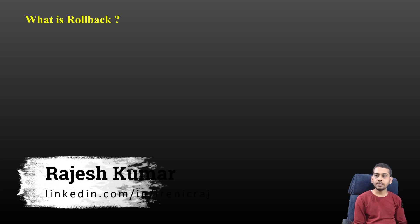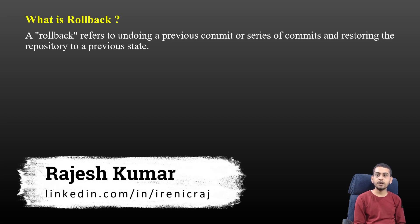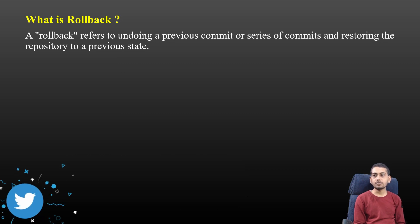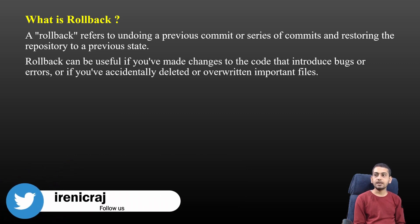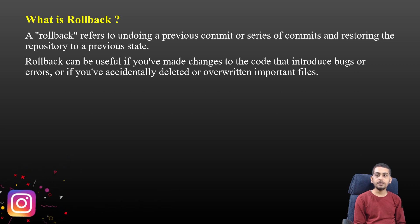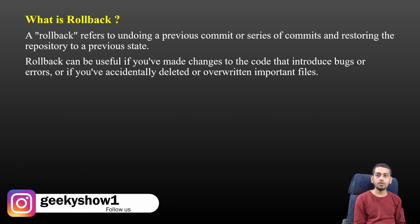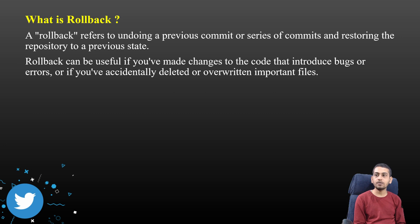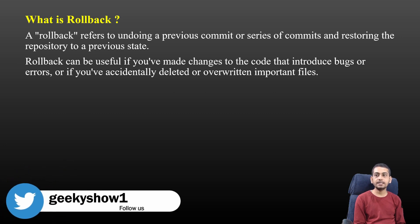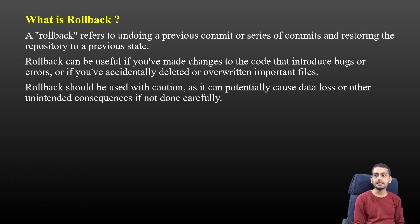Let's talk about rollback. Rollback refers to undoing a previous commit or series of commits and restoring the repository to a previous state. Rollback can be useful if you have made changes to the code that introduce bugs or errors, or if you have accidentally deleted or overwritten important files. Rollback should be used with caution as it can potentially cause data loss or other unintended consequences if not done carefully.